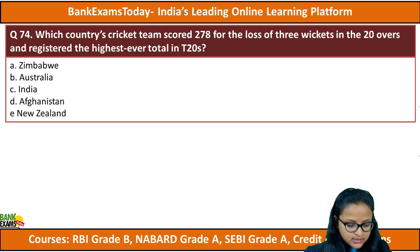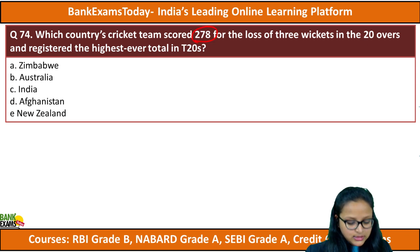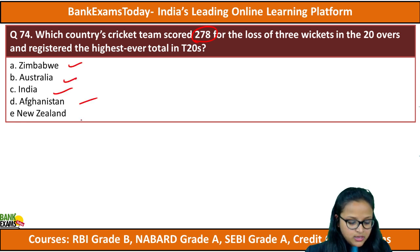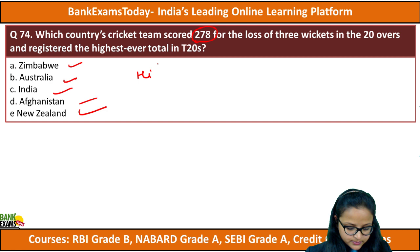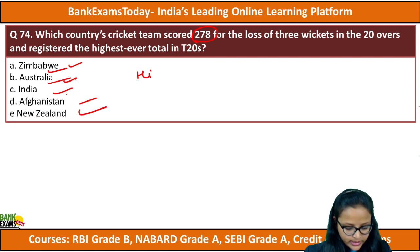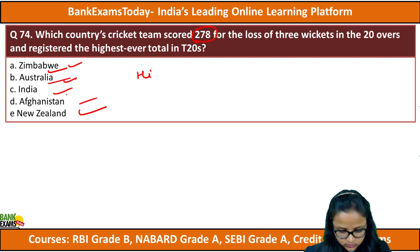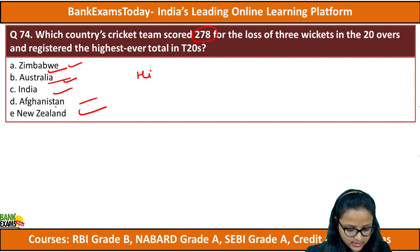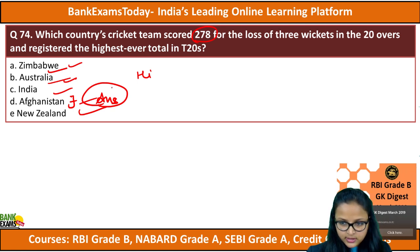Moving to question 74: which country's cricket team scored 278 for the loss of 3 wickets in 20 overs and registered the highest ever total in T20s? The options are Zimbabwe, Australia, India, Afghanistan, or New Zealand. The answer is Afghanistan — they registered the highest ever T20 score.